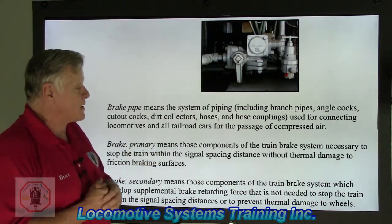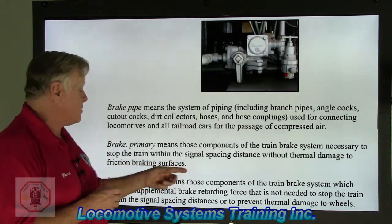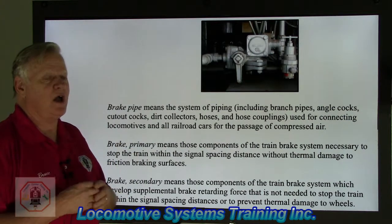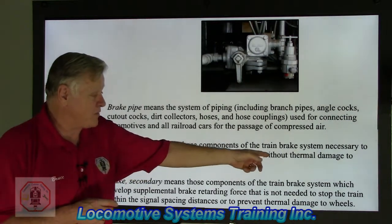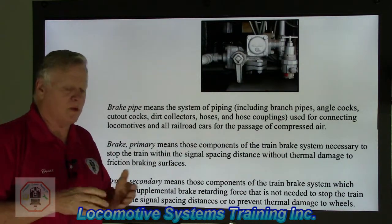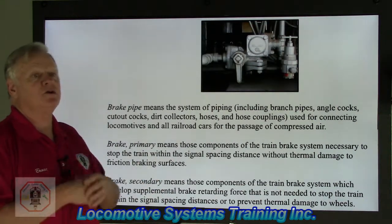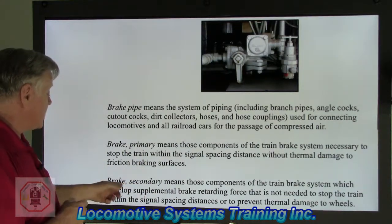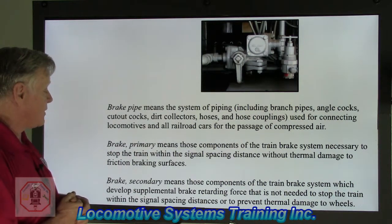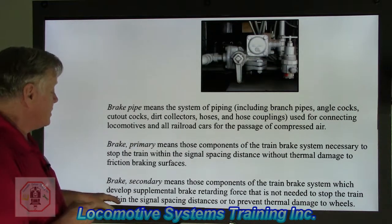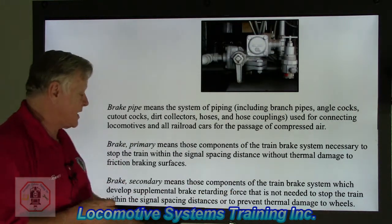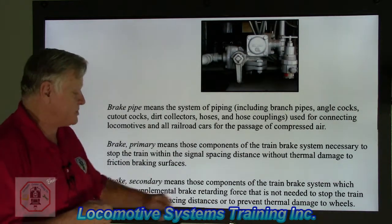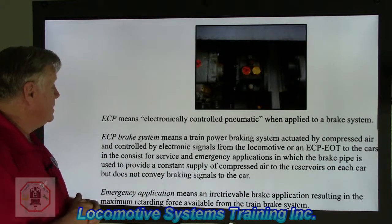Primary brake means those components of the train brake system necessary to stop the train within the signal spacing distance without thermal damage to friction braking surfaces. When we apply the brakes, they're engineered to prevent thermal damage — we don't want hot wheels or hot braking components. Secondary brake means those components which develop supplemental retarding forces not needed to stop the train within signal spacing distance — it's an additional, supplemental braking system, not the primary one, also designed to prevent thermal damage to wheels.